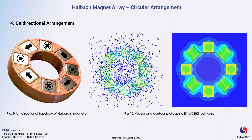This setup creates strong unidirectional magnetic fields, which is incredibly useful for applications that require high stability and directionality in the magnetic field. The resulting magnetic field configuration can be harnessed in applications like linear motors, where a consistent and powerful magnetic force is necessary for effective operation.